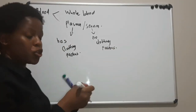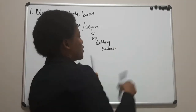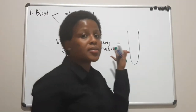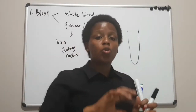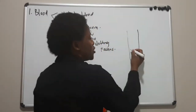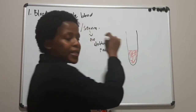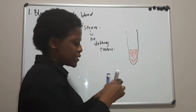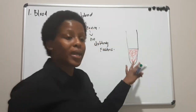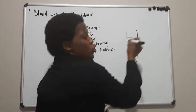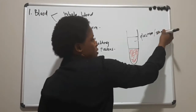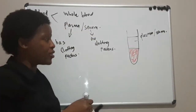If we draw a tube that contains the blood sample and centrifuge it, the blood will separate into its components. The red cells, which are responsible for the red color of blood, settle at the bottom. Then there's a buffy coat layer, which contains your white cells and platelets. The top part is your plasma — or serum — depending on whether clotting factors are present or not.